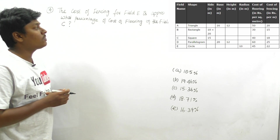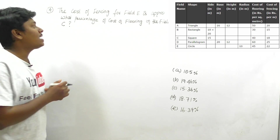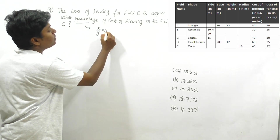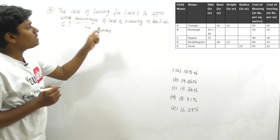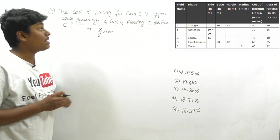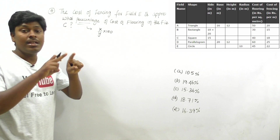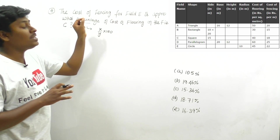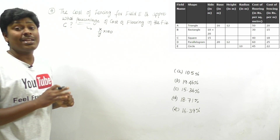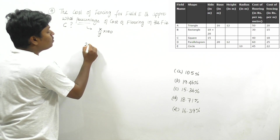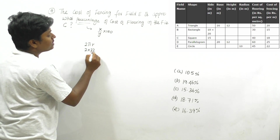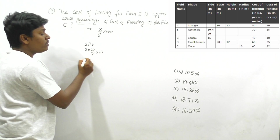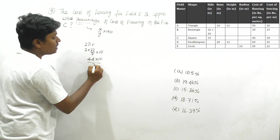The fourth question asks: the cost of fencing of field E is approximately what percentage of the cost of flooring of field C? For a percentage problem, use the formula: (x ÷ y) × 100. Field E is a circle, so fencing = circumference = 2πr = 2 × (22/7) × 10.